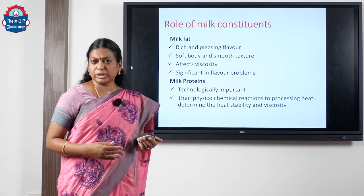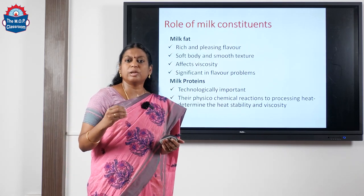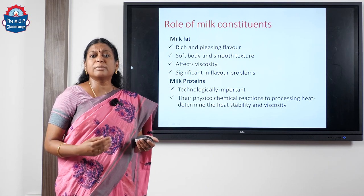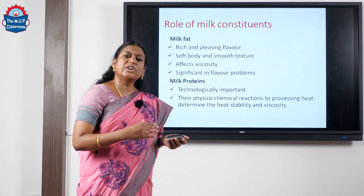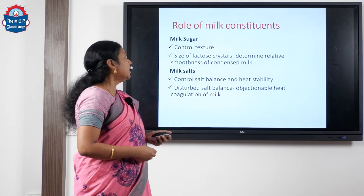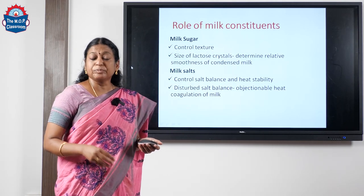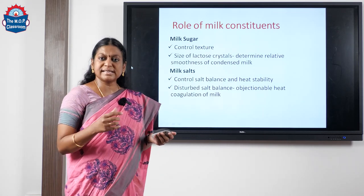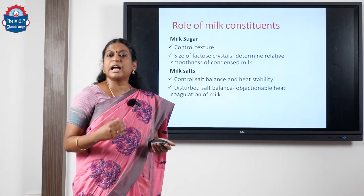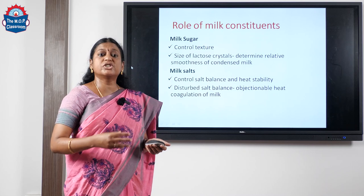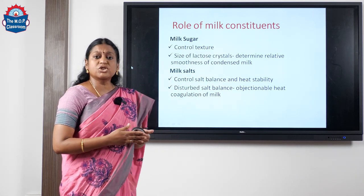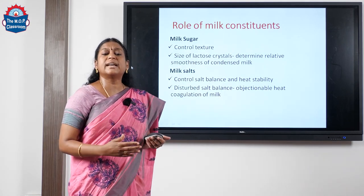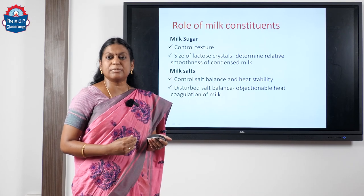Now looking into milk protein: milk protein is technologically very important in making sweetened condensed milk because it has an impact on the physico-chemical properties and it undergoes a lot of changes during heat treatment. Milk sugar determines the texture of sweetened condensed milk; if not handled carefully, the finished product may have problems like sandiness or sugar sediment. Milk salts control the salt balance and are indirectly responsible for the heat stability of the product.